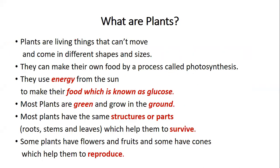So what are plants? Plants are living things that cannot move and they come in different shapes and sizes. They can make their own food by a process called photosynthesis. They use energy from the sun to make their food, which is known as glucose.